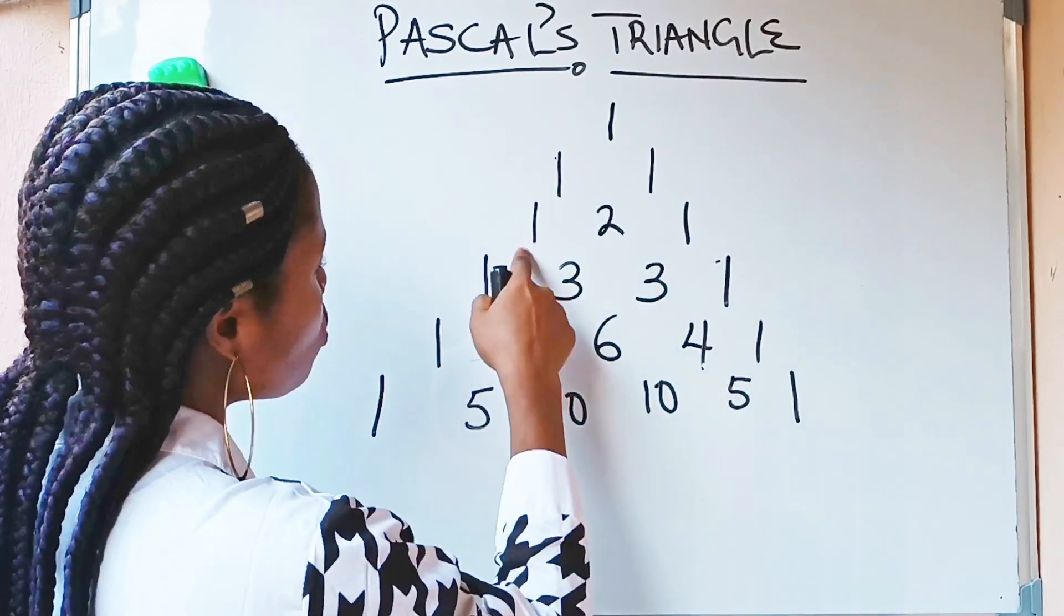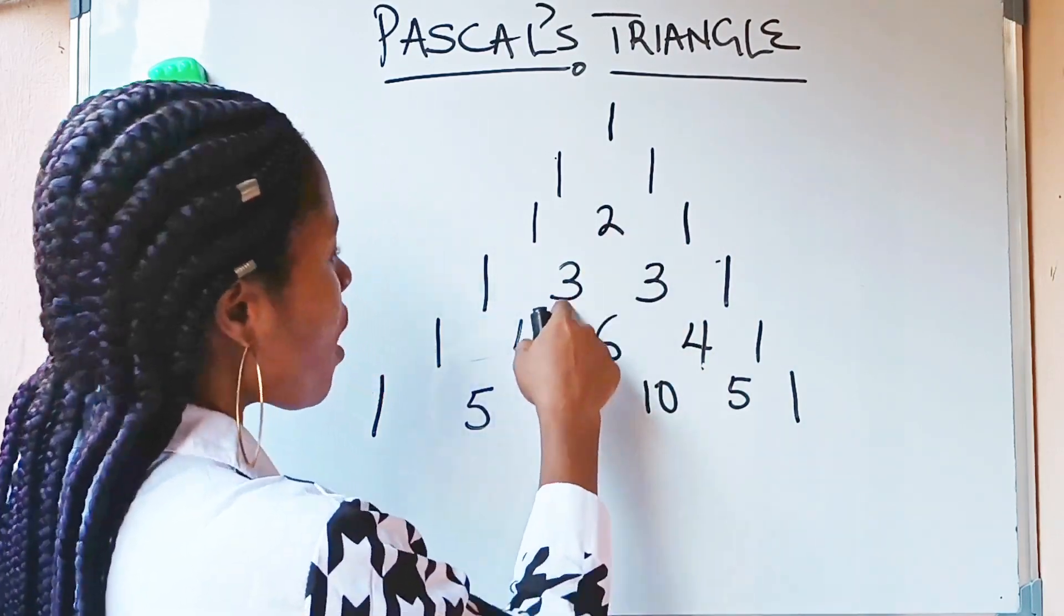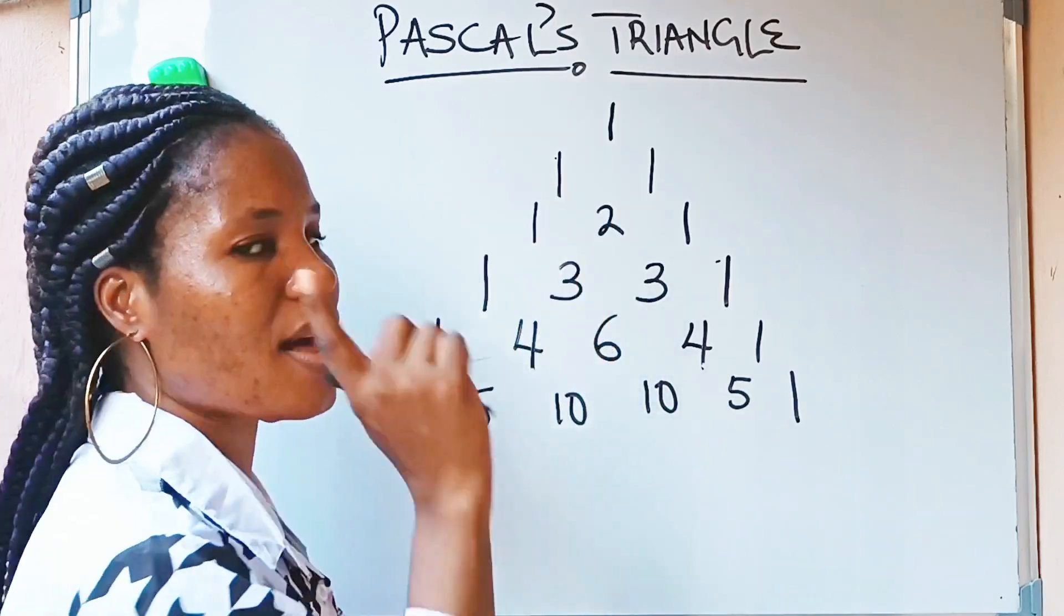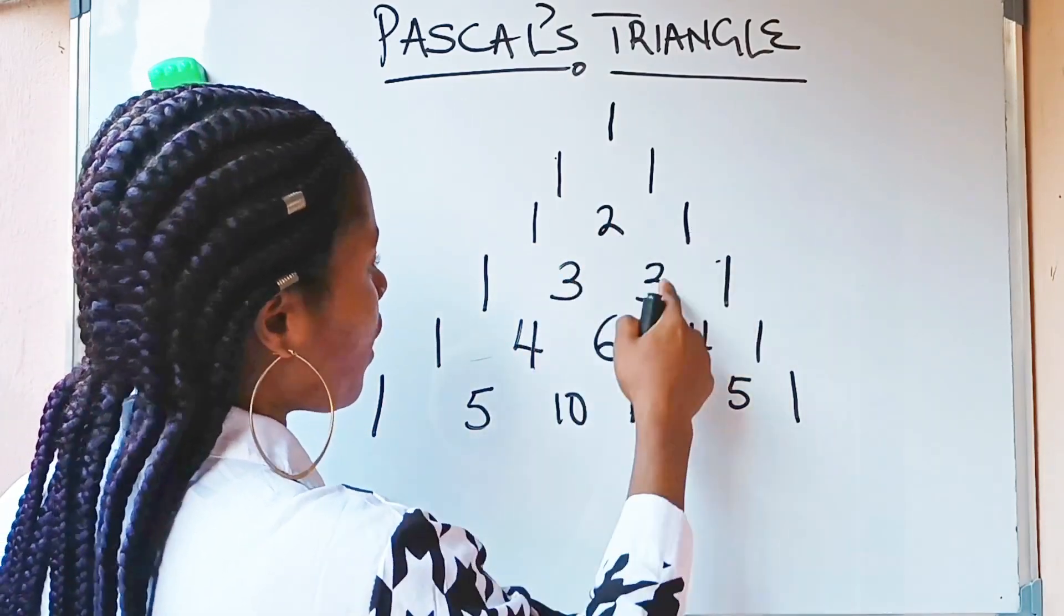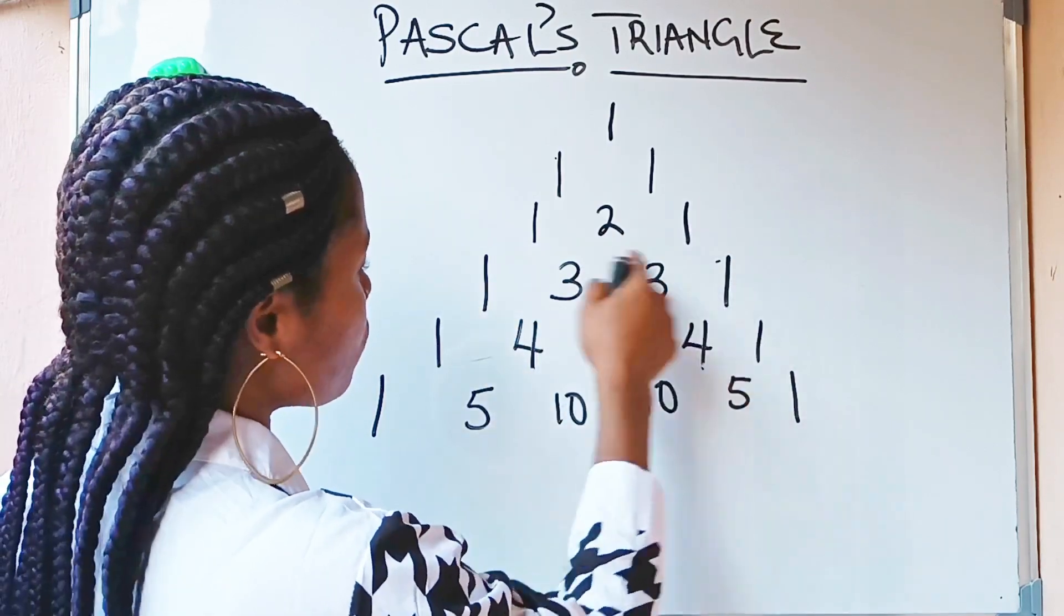After doing that, you now do 1 plus 2, you are going to get these 3. Write whatever you got in between the 2 numbers you added together. So, 1 plus 2 gave me 3. 2 plus 1 gave me 3. And I completed the row with 1 and 1.